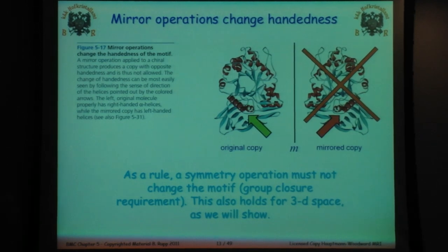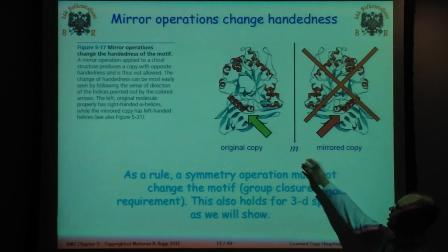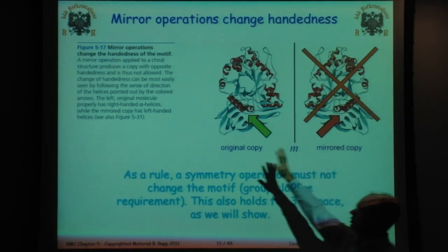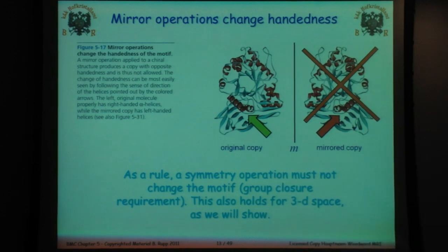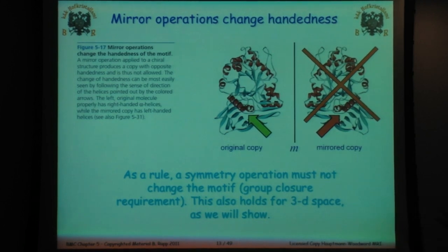I talked about rotation and translation. The one thing that's not allowed is mirroring. You can't take a protein and have a crystal with another one that's mirrored, because what that effectively does is change the axis of rotation of the alpha helices, which biology doesn't allow. Most of life — all of life — is right-handed. We don't have left-handed systems, so mirror operations are not allowed in protein crystallography.